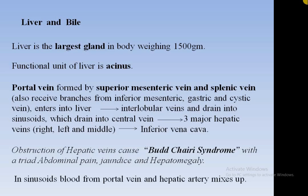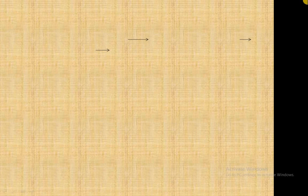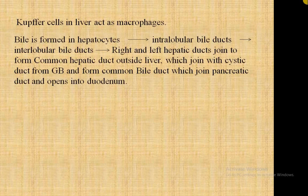In the sinusoids, blood from the portal vein and hepatic artery mixes. Kupffer cells act as macrophages and are present in the liver. Bile is formed in the hepatocytes, and from there the interlobular bile ducts arise.